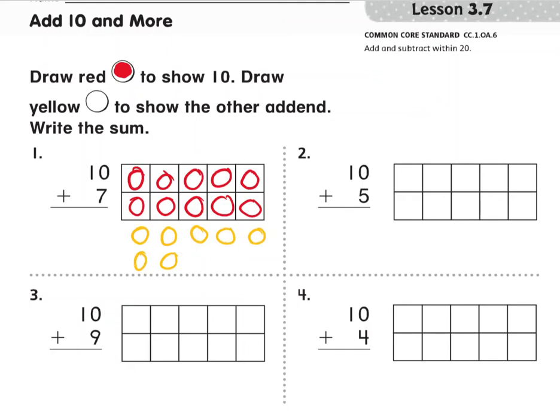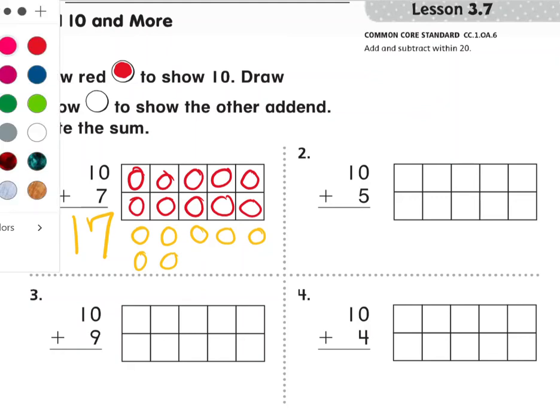16, 17. 10 plus 7 equals 17, so the sum is 17. I'll do number 4 with you.